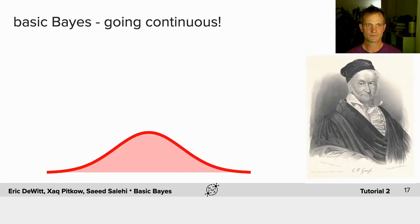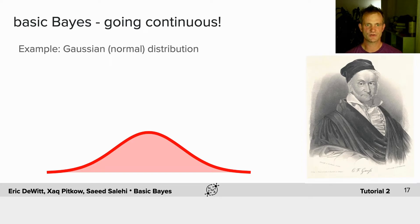The Gaussian distribution. We're going continuous, and the example we're going to use is the Gaussian or normal distribution for most of our exercises, formalized by Gauss with contributions from Laplace.